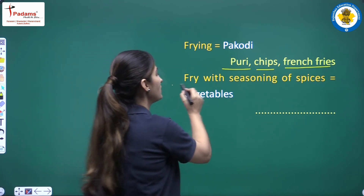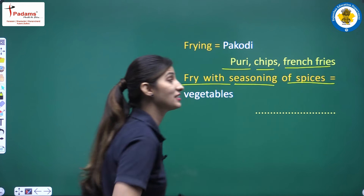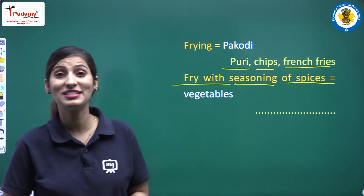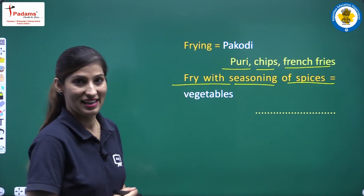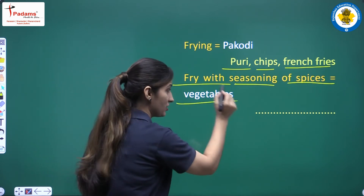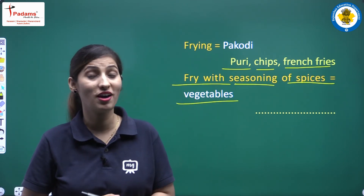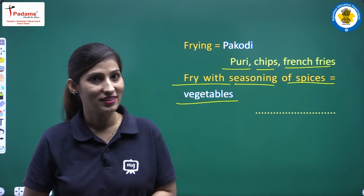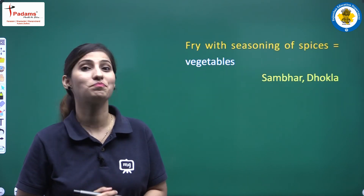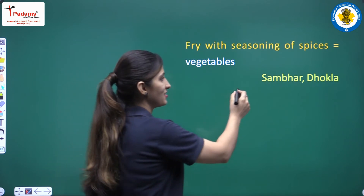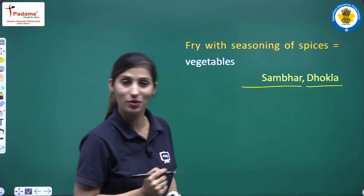Now the last one is fry with seasoning of spices — jab hum spices use karte hai, tadka lagate hai. The example is vegetables — there are many vegetables in which we add tadka. More examples are sambar and dhokla. You can add some more items.